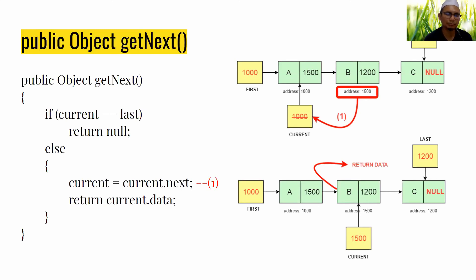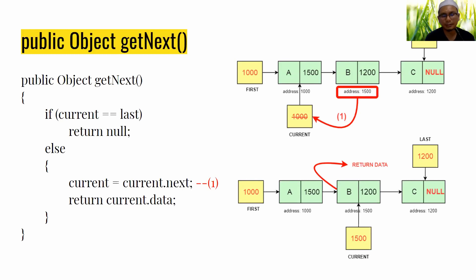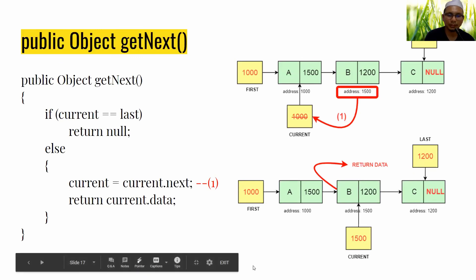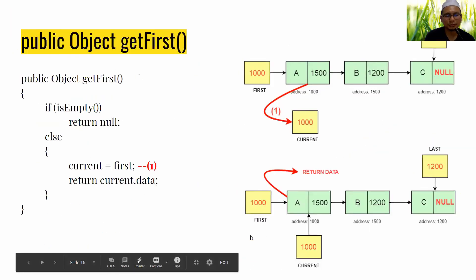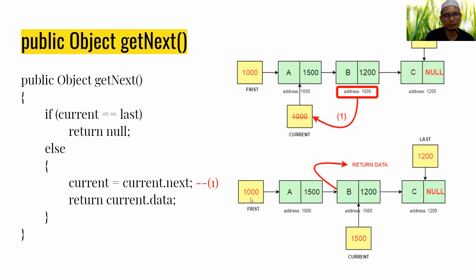If we want to access all data in the linked list, we need to use a loop. Inside the loop we call getNext again and again until we find the last data or meet a certain condition.